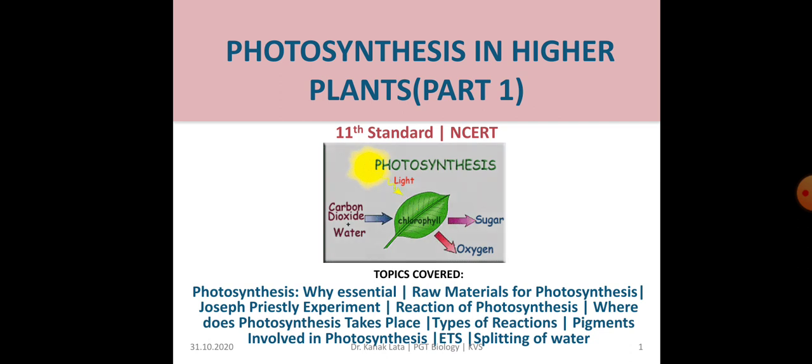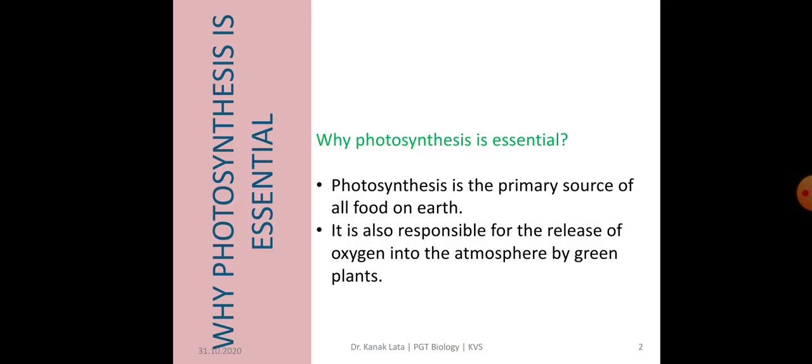Let us start the session with a curious question: why photosynthesis is essential. As we know that photosynthesis is the most important anabolic process on earth by which green plants, that is autotrophic organisms, synthesize complex carbohydrates from simpler substances. Photosynthesis is the primary source of all food on earth.